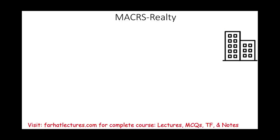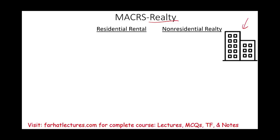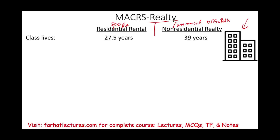Let's take a look at MACRS for real property. Here we are talking about buildings because we don't depreciate land — that's the reason why we assume building. We're going to break down the real property into two types. We're going to have residential rental — where people live — and we have non-residential property, which is considered commercial. Think of an office building. For residential rental, we're going to have 27 and a half years. For non-residential, we're going to have 39 years.